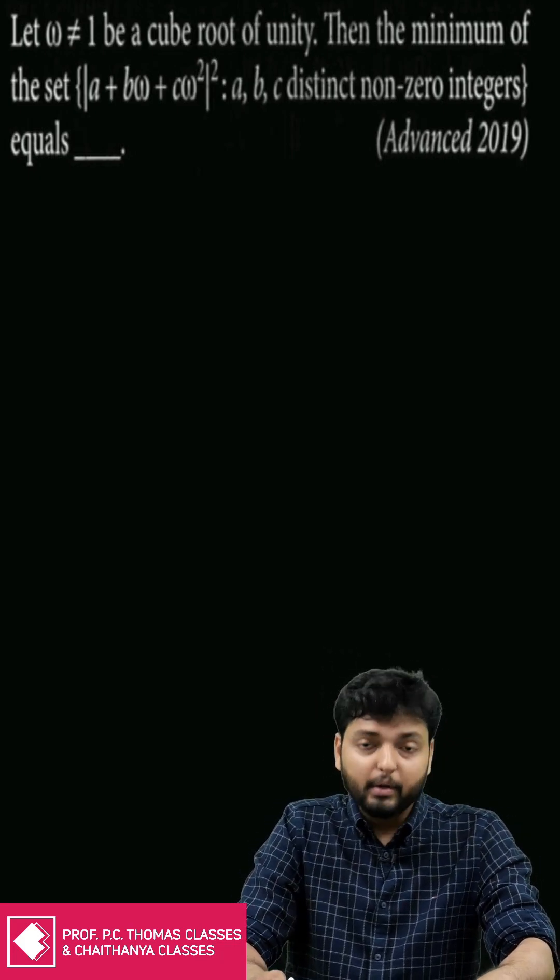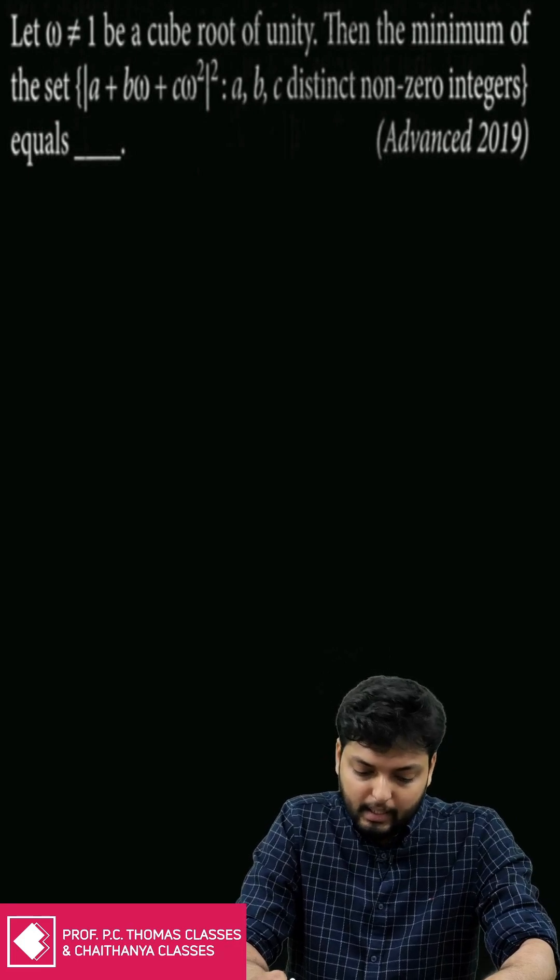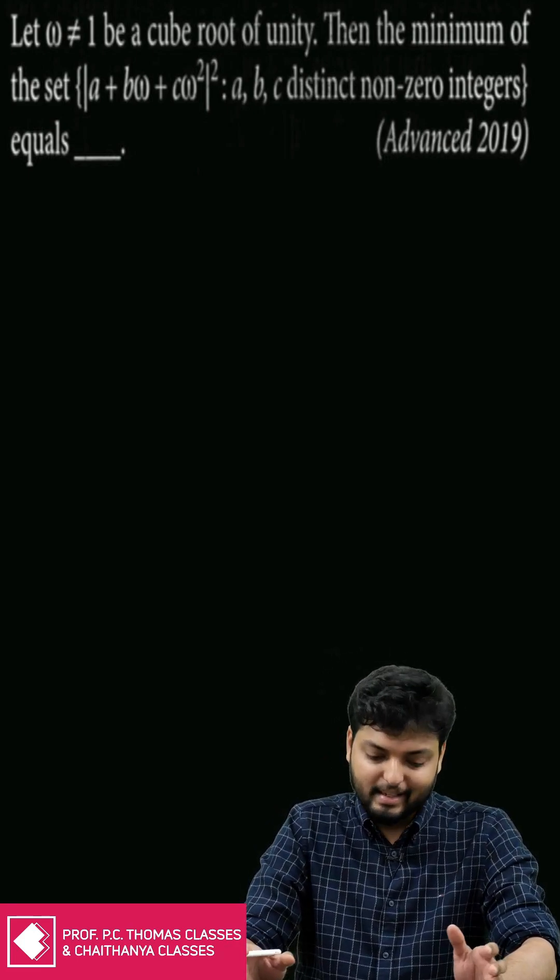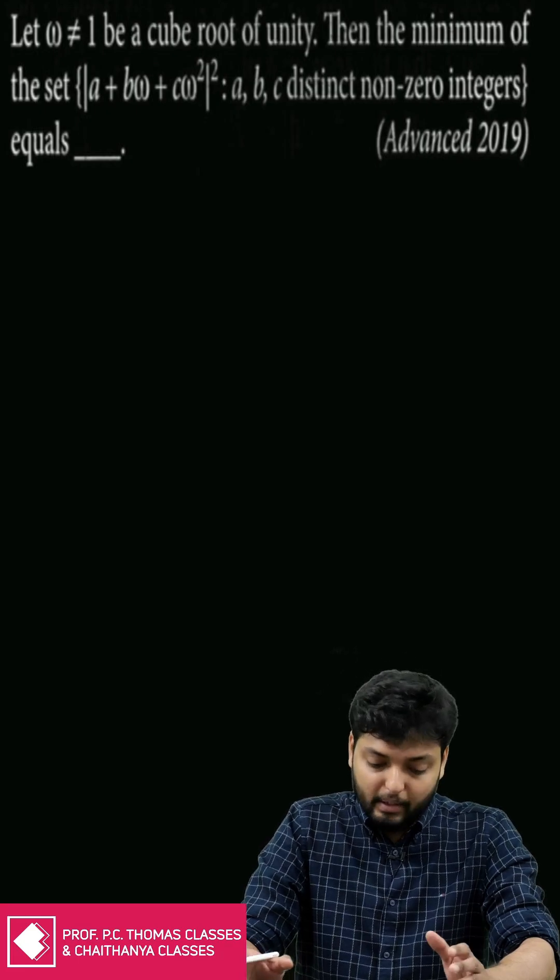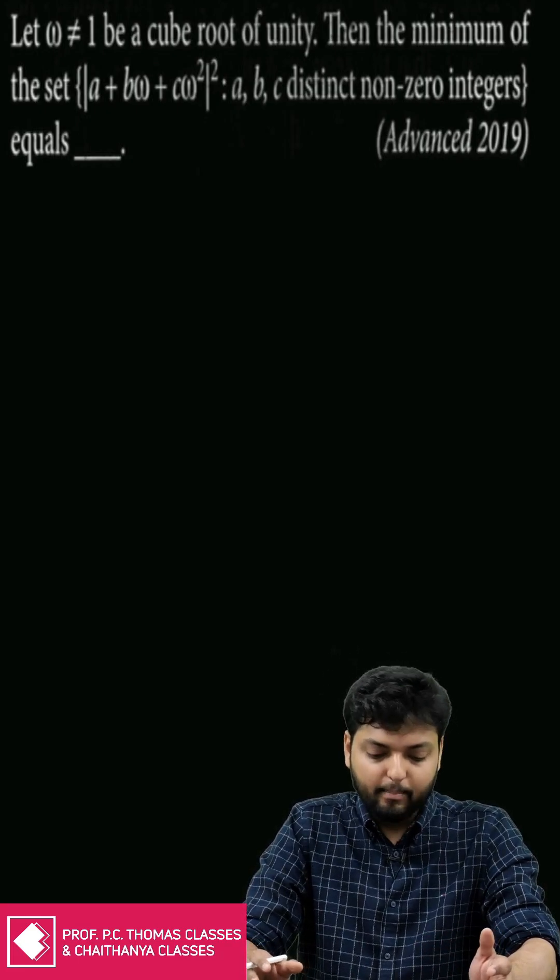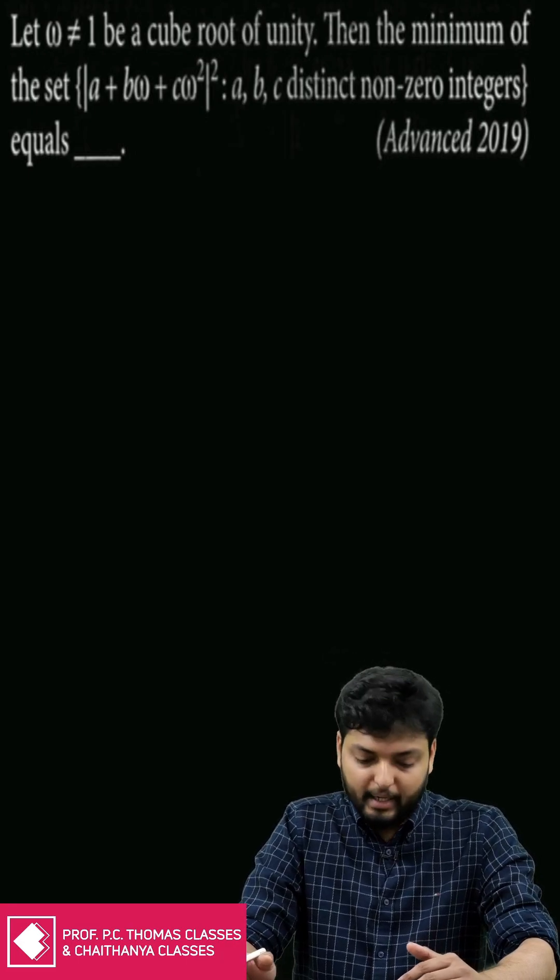The question says let omega not equal to 1 be a cube root of unity and find the minimum of the set. The set contains values of the square of modulus of a complex number a plus b omega plus c omega square.